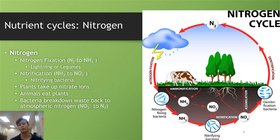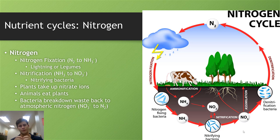Next we have the nitrogen cycle. The largest reservoir of nitrogen on the planet is in the atmosphere in the form of N2 — two nitrogen atoms covalently bonded together. The air we breathe is actually 79% nitrogen, but we don't notice it because nitrogen gas is inert and stable. Nitrogen can be pulled out of the atmosphere into usable forms through a process called nitrogen fixation, which can happen via lightning strikes or via legumes — a type of plant that can absorb nitrogen gas and incorporate it into their tissues as NH3⁻.